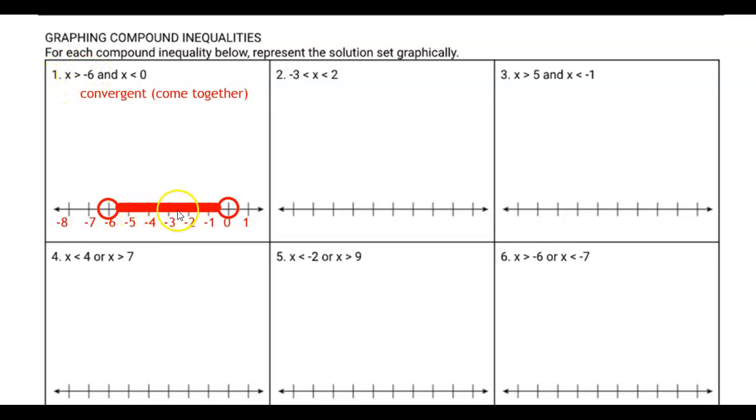Then I'm going to look at x is less than zero, so I place an open circle on zero, less than, not less than or equal to, so it's an open circle on zero, and it says x is less than zero, so I'm going to shade down from zero. The two meet in the middle, and that's okay, because convergent inequalities are inequalities that come together.